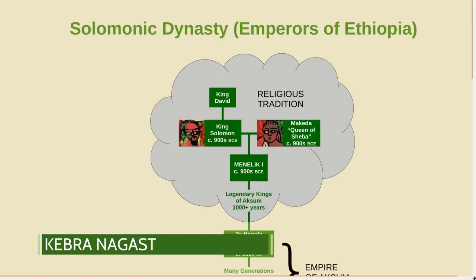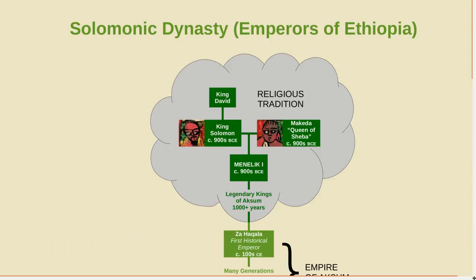According to the Kebra Nagast, which is kind of Ethiopia's national origin story, the queen of Sheba was named Makeda and she had relations with Solomon during her visit. When she returned home, she gave birth to Menelik, who became the first king of Ethiopia. Menelik later goes back to meet Solomon as an adult and steals the Ark of the Covenant and brings it back to Ethiopia.